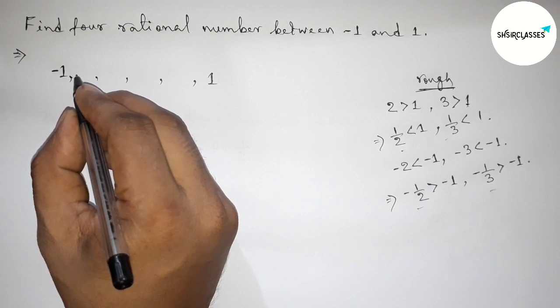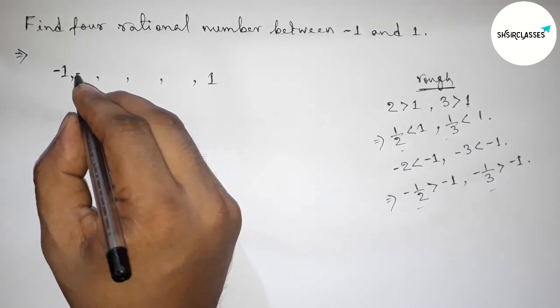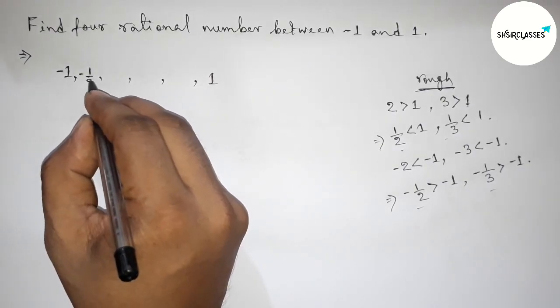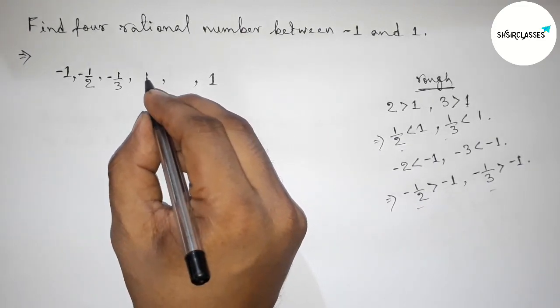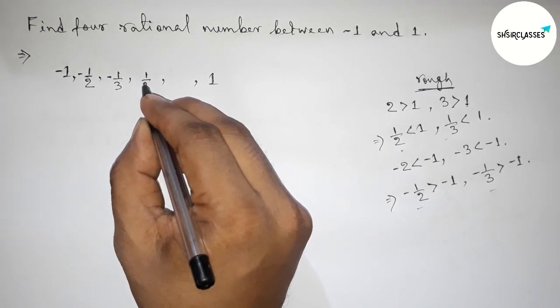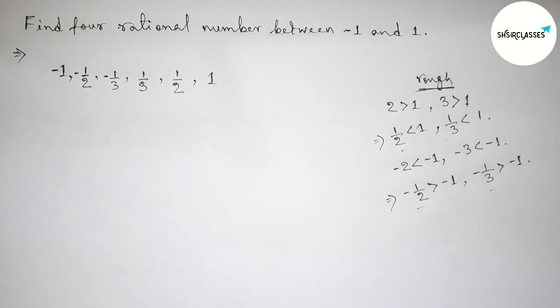So now here, first write down here. This is first, here will be minus one by two, then here minus one by three, then here one by three, then here will be one by two. So, example.